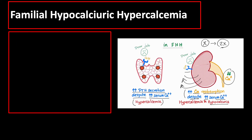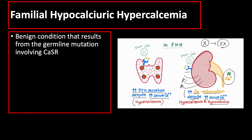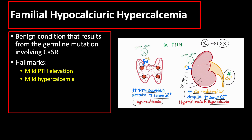Familial hypocalciuric hypercalcemia is a benign condition resulting from a germline mutation involving calcium-sensing receptors. Because of the mutation of the calcium-sensing receptor in the parathyroid gland, there is elevation of parathyroid hormone and it may result in hypercalcemia. Because there is also mutation of the calcium-sensing receptor in the kidneys, there is decreased calcium excretion, or hypocalciuria, despite elevated blood calcium level. An additional laboratory finding is mild hypermagnesemia.